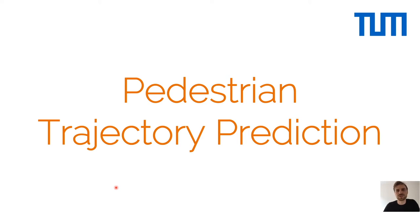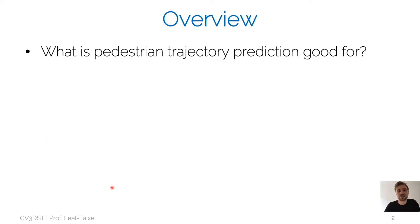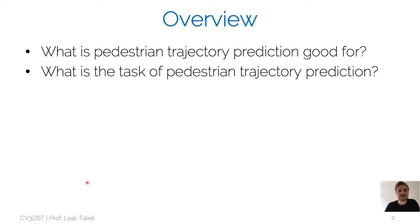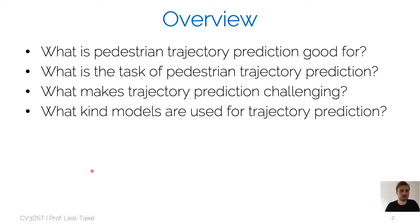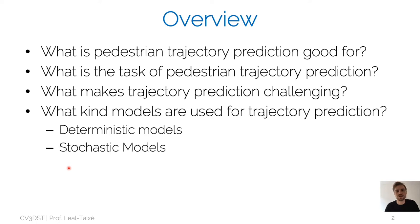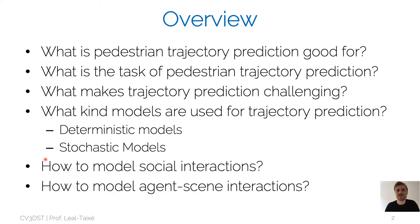Hello everybody. On today's lecture about pedestrian trajectory prediction, my name is Patrick Dehendorfer and I'm one of Professor Leal-Taché's PhD students working mainly on that field. Today we're going to discuss what pedestrian trajectory prediction is actually good for and how we can define mathematically the task of prediction. We'll talk about what makes trajectory prediction challenging, what kind of models we can use, first deterministic models and later stochastic models, and how to incorporate social interactions and agent-scene interactions.